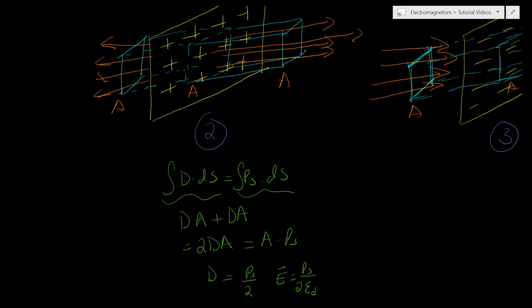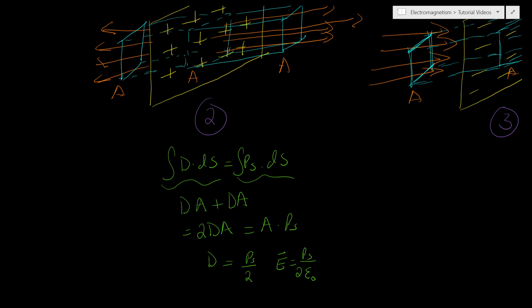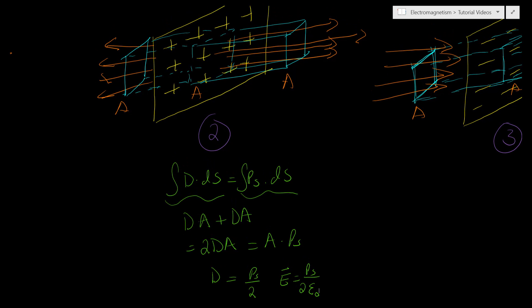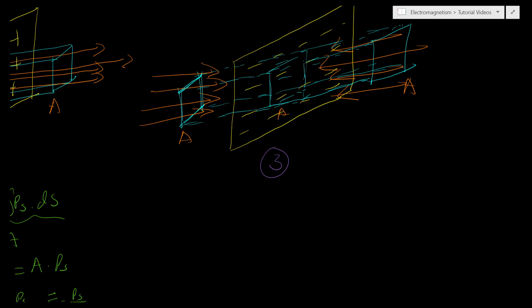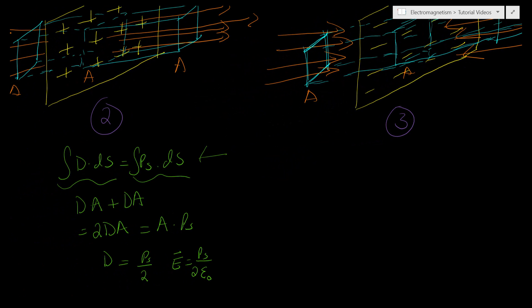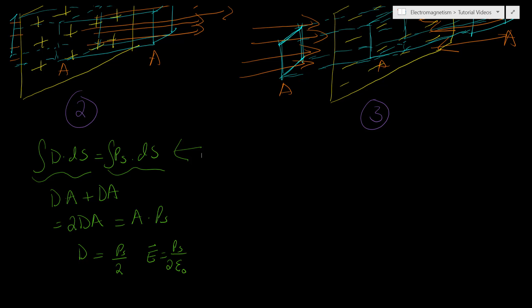If we think about direction — since the field goes away from the surface, it could be in the positive or negative direction. I want to get into direction once we're done. Now for the third example, which is the negative plate — it's essentially the same thing except all the electric field lines are going into the surface. Even though the field lines are going towards the surface, the flux is still non-zero, so we get the same result.